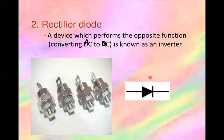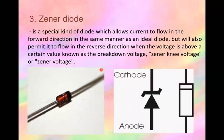Rectifier diodes perform rectification from AC signal to DC signal. As in the mobile charger example, the step-down transformer converts 220V to 5V AC, and this diode converts that 5V AC to 5V DC. Rectifier diodes can also be used in inverters. The Zener diode behaves like a normal diode in forward bias, but its special property is in reverse bias — due to its breakdown voltage, it can be used as a voltage regulator.